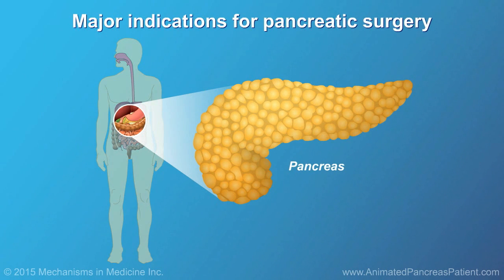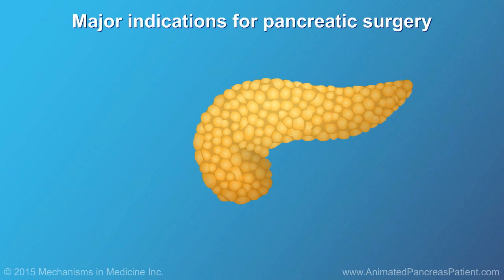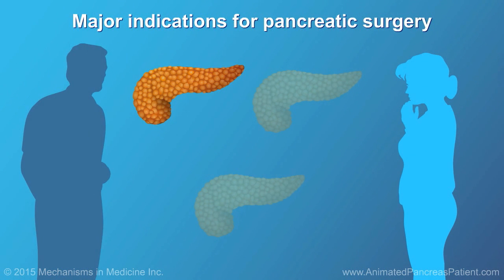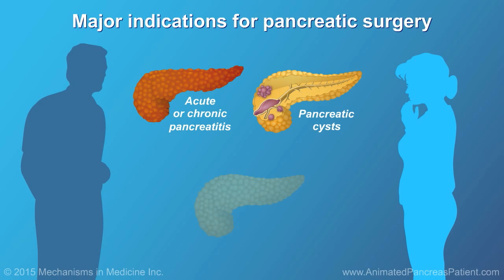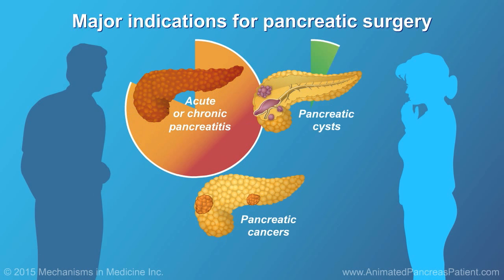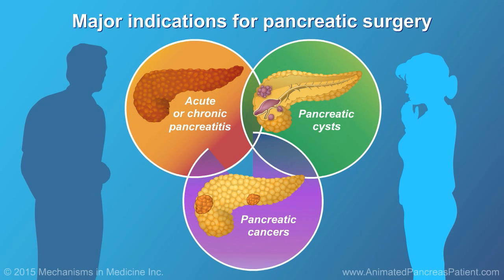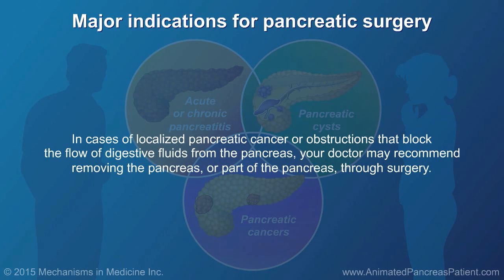The pancreas is an important organ in the digestive system. It can be affected by episodic flare-ups of acute or chronic pancreatitis, pancreatic cysts, and pancreatic cancers. More than one of these conditions may manifest in the same patient at one time. In cases of localized pancreatic cancer or obstructions that block the flow of digestive fluids from the pancreas, your doctor may recommend removing the pancreas or part of the pancreas through surgery.